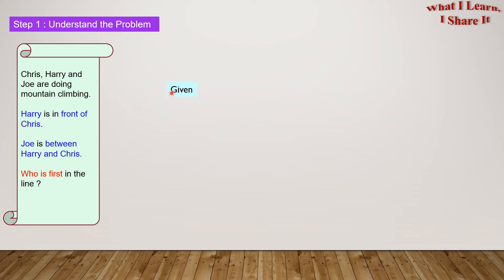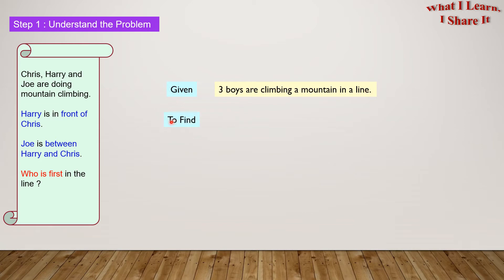So what are we given? Chris, Harry, and Joe are doing mountain climbing. In our own words, we can write that three boys are climbing a mountain in a line. What is there to find? We need to find who is first in the line.